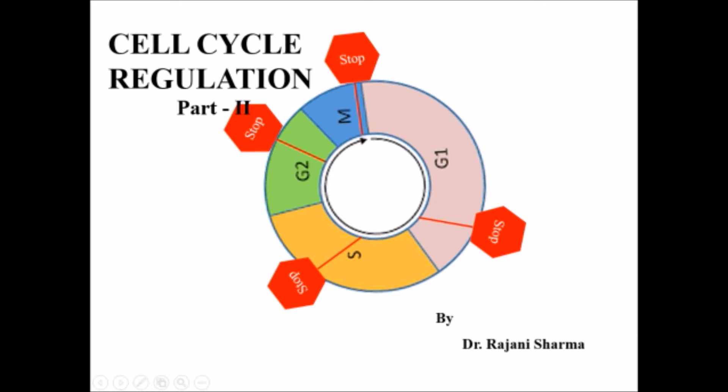Welcome to my channel 'Be Yourself.' I'm Dr. Rani Sharma, and today I'm going to deal with the second part of cell cycle regulation. In the first part, I discussed how maturation promoting factor was discovered, which includes CDK and cyclin. There are different types of CDK-cyclin complexes in both yeast and animals, and I have plotted a graph for the increase and decrease in levels of different cyclins in animals.